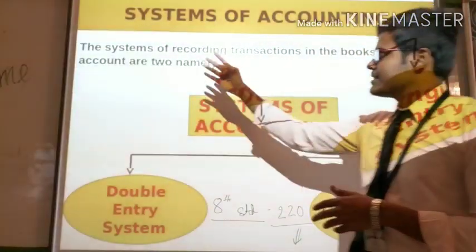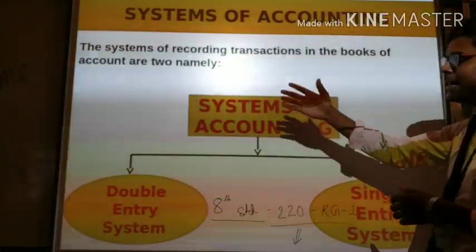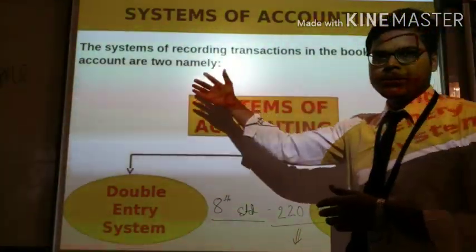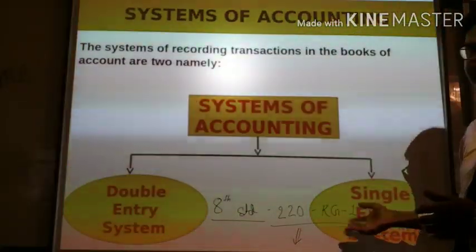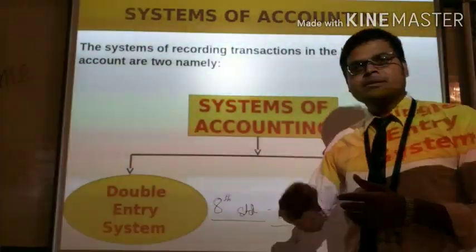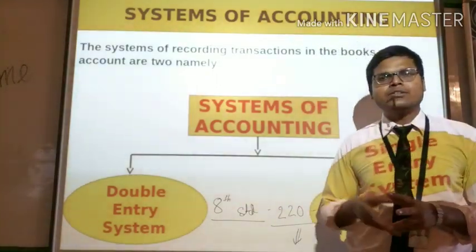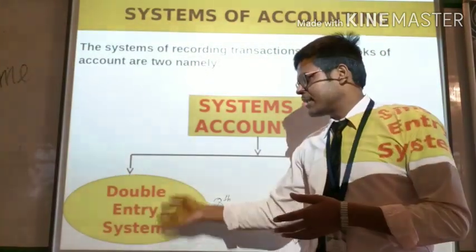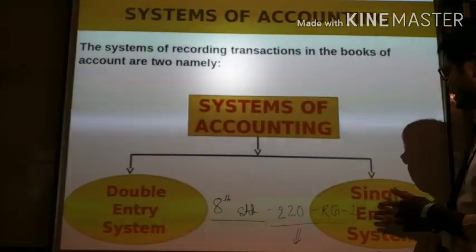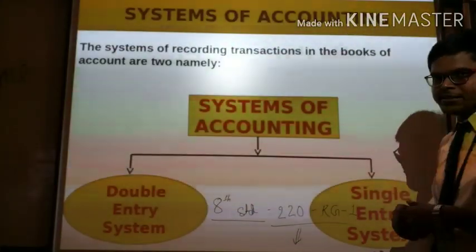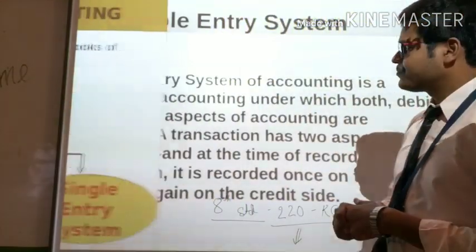Basically, the systems of recording transactions in the books of account are two: that is the double entry system and the single entry system. We have two methods — the first method is the double entry system and another is the single entry system.